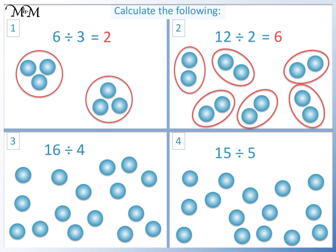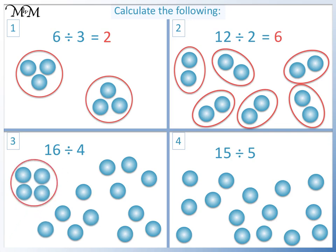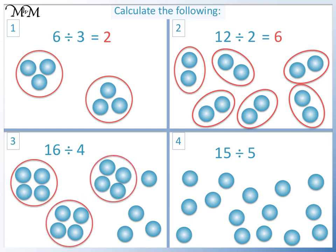Question 3: 16 divided by 4. We are dividing into groups of 4. We have 1, 2, 3, 4 groups of 4. So 16 divided by 4 equals 4.